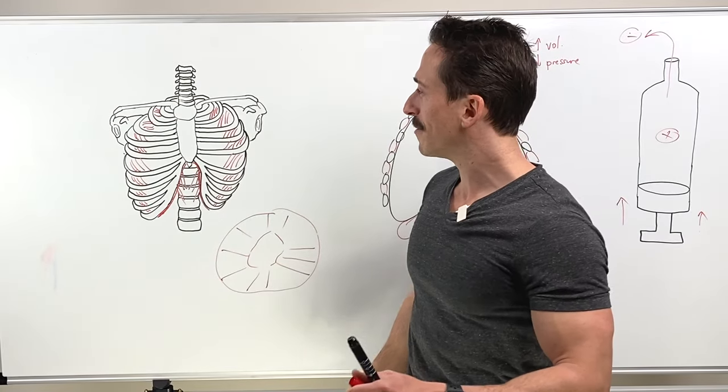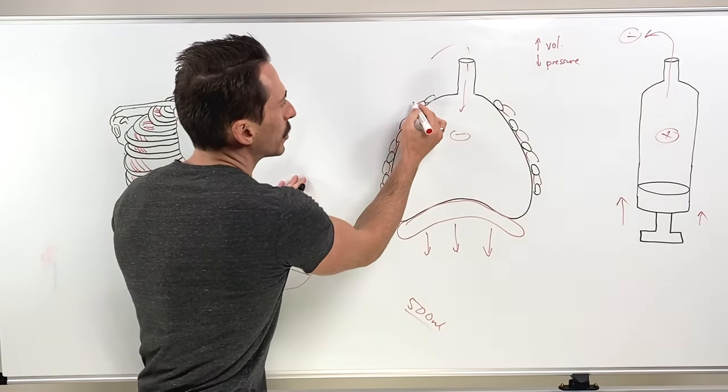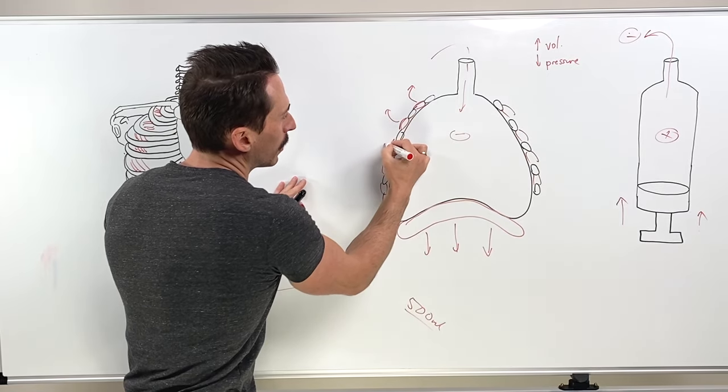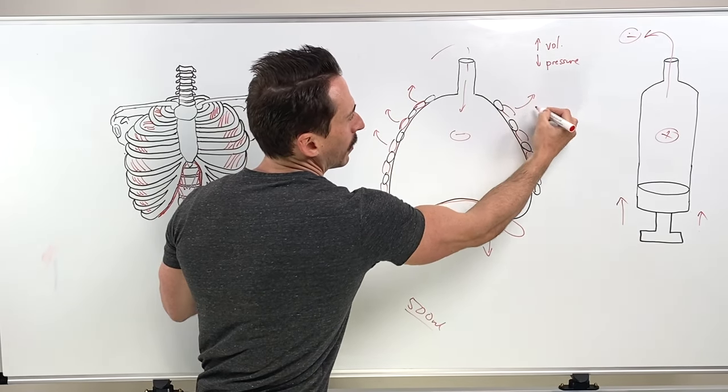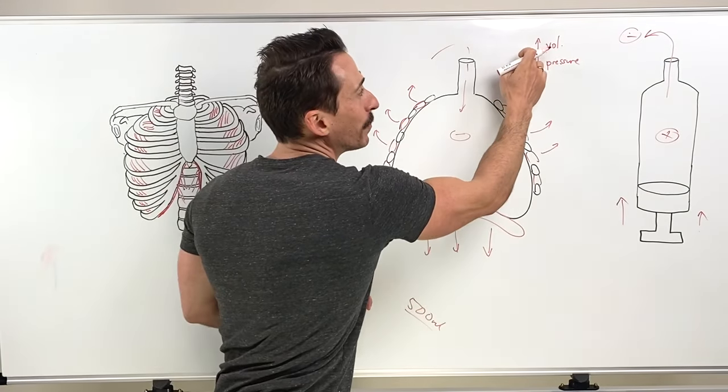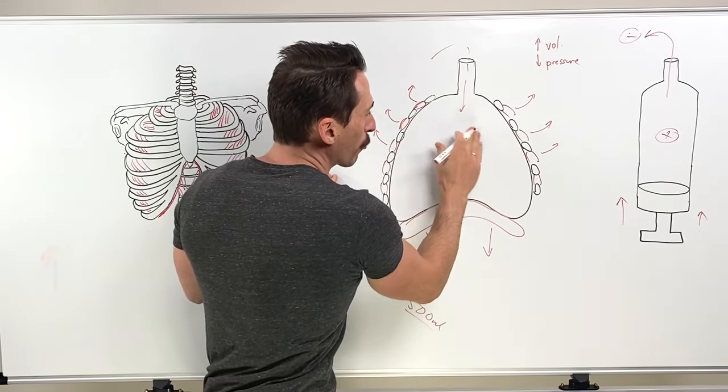Now, what do these muscles do when they contract? They lift the rib cage. They lift the rib cage up and out. That's further increasing the thoracic volume, further decreasing the pressure inside.